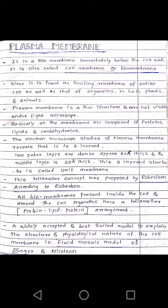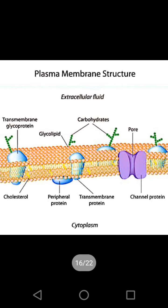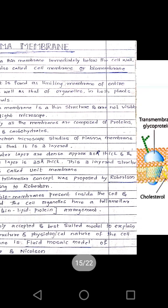The fluid mosaic model explains the passive and active movement between the cell and its surroundings. It also explains cell-cell interaction and cell signaling. So the fluid mosaic model covers cell signaling, cell-cell interaction, and passive and active movement of molecules between the cell and its surrounding environment.